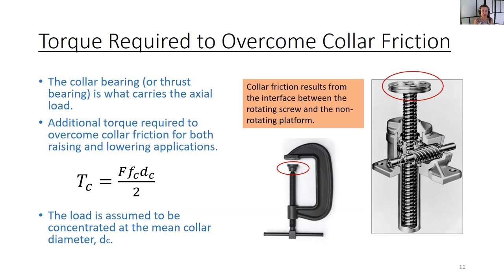So where does the friction happen? Collar friction results from the interface between the rotating screw and the non-rotating platform. In a typical C-clamp, you're going to turn the handle and the lead screw will rotate upward. Inside the little collar, you have a ball that's rotating, but the collar is not rotating. I think of it as the interface between something that's rotating and something that's not rotating. You get some rubbing and hence some friction.